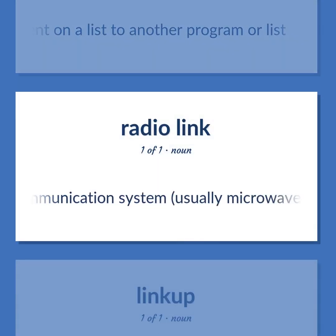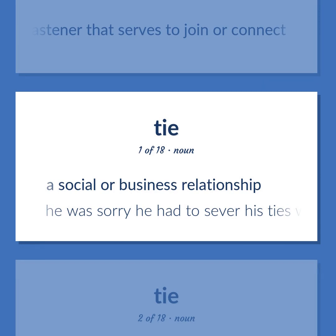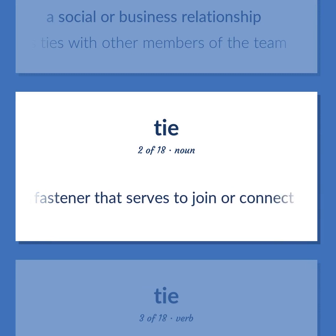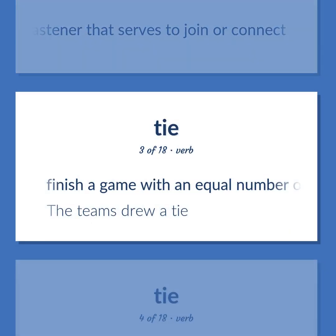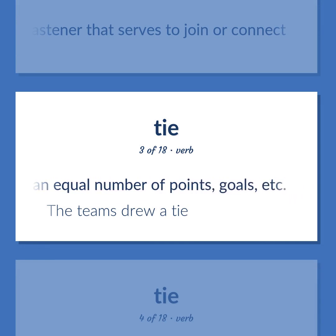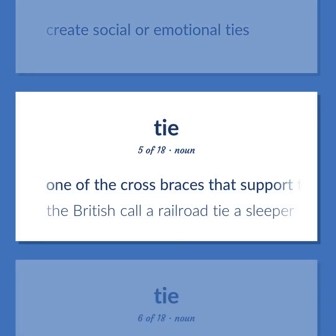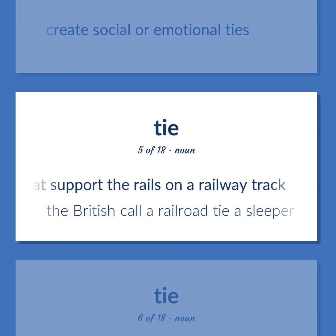Tie. A two-way radio communication system, usually microwave, part of a more extensive telecommunication network. A fastener that serves to join or connect. A social or business relationship. He was sorry he had to sever his ties with other members of the team. Finish a game with an equal number of points, goals, etc. The teams drew a tie. Create social or emotional ties. One of the cross braces that support the rails on a railway track. The British call a railroad tie a sleeper.